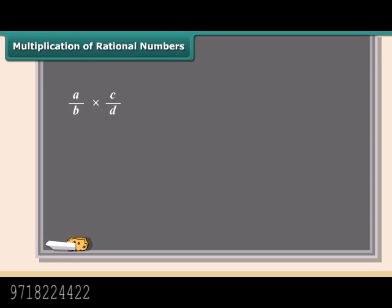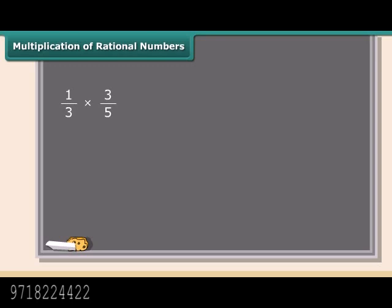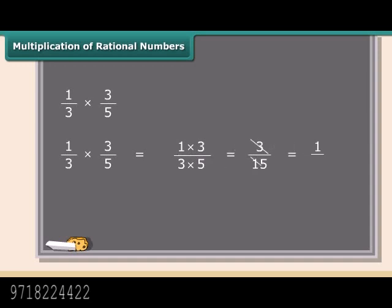Now we will study multiplication of rational numbers. This is the easiest one — to multiply two rational numbers, just multiply the numerators and denominators separately. Here is an example: we will multiply 1 by 3 and 3 by 5. First multiply the numerators, then multiply the denominators. This fraction can be further simplified to 1 by 5.